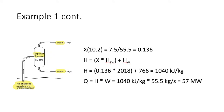The fluid enthalpy requires dryness (x) to be calculated first by dividing the steam mass flow by the total mass flow calculated previously. The dryness equation is then rearranged to solve for enthalpy, using the previously calculated dryness value and steam tables to find the enthalpies of saturated water and steam. The heat flow Q is then calculated by multiplying the enthalpy by the mass flow rate. The final heat flow is 57 megawatts.